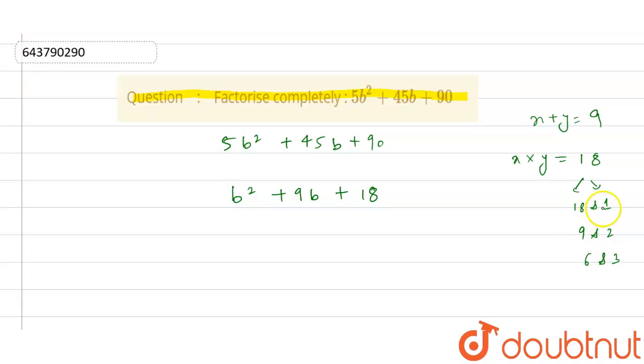So first of all, when we 18 plus 1 is 19 and 18 minus 1 is 17, so we are not getting 9. Similarly, 9 plus 2 is 11 and 9 minus 2 is 7, so we are not getting this. And when we subtract 6 minus 3 is 3 and 6 plus 3 is 9, so we are getting 9.